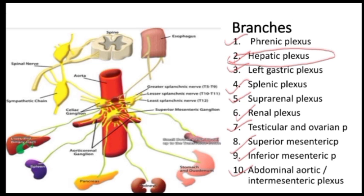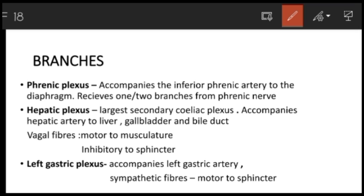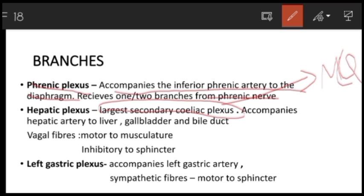Most plexuses accompany the corresponding artery. The phrenic plexus accompanies the inferior phrenic artery to the diaphragm and also receives one or two branches from the phrenic nerve. The hepatic plexus, which is the largest secondary celiac plexus — important as an MCQ — accompanies the hepatic artery to the liver, gallbladder, and bile duct. The parasympathetic vagal fibers are motor to the musculature of the gallbladder and inhibitory to the sphincter of the gallbladder.